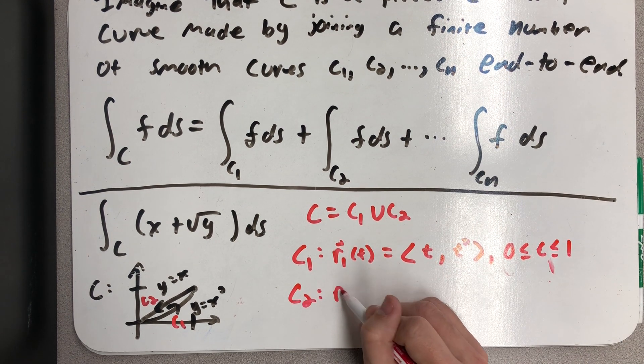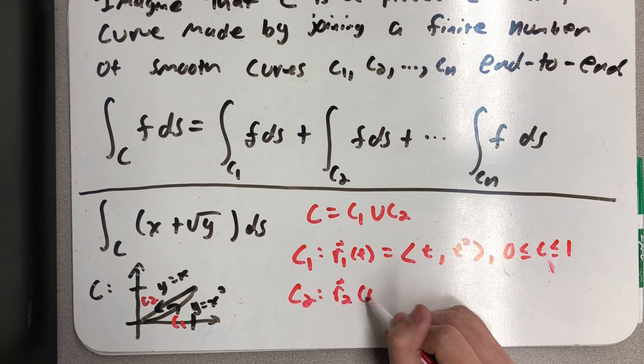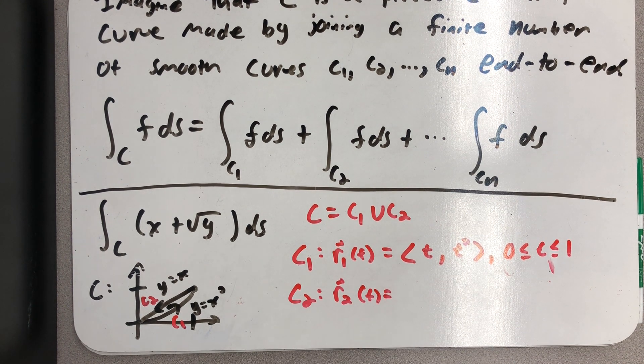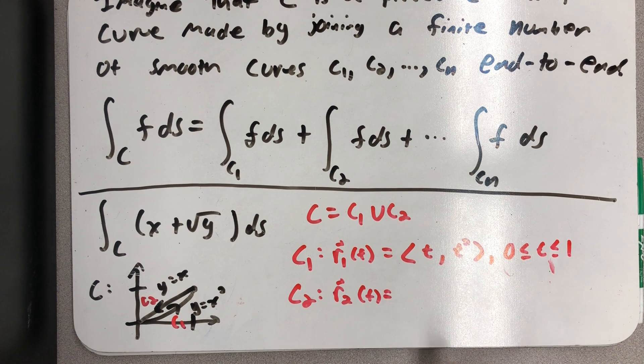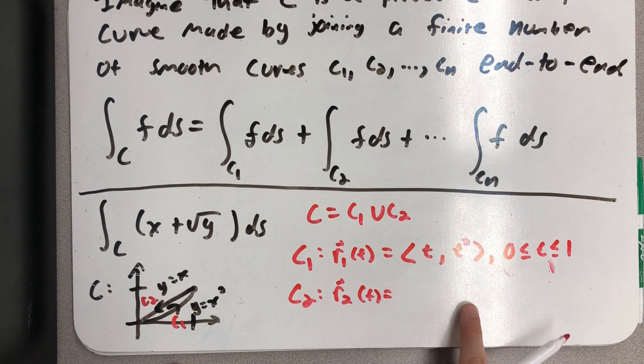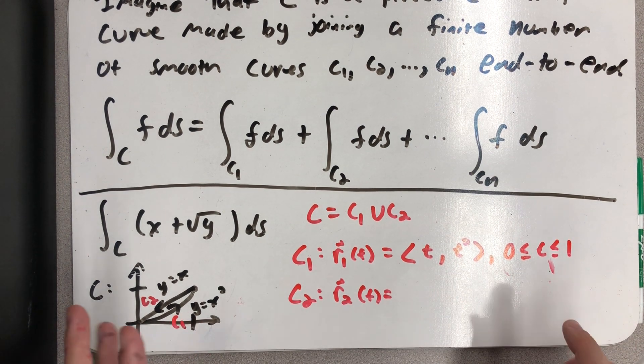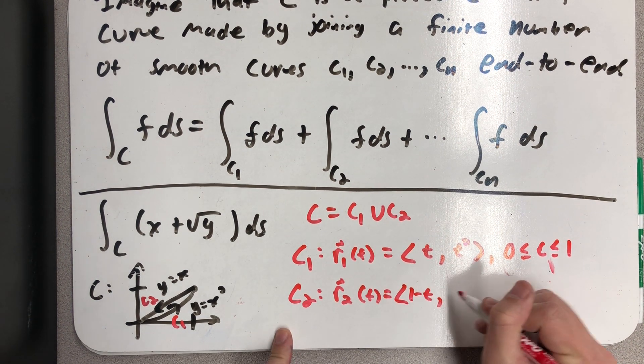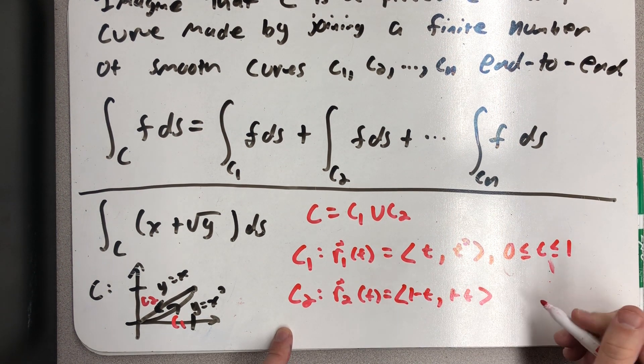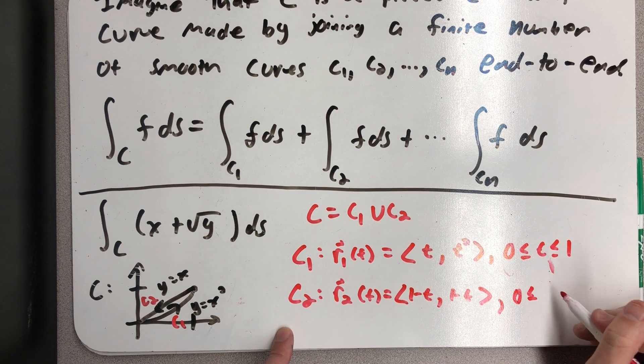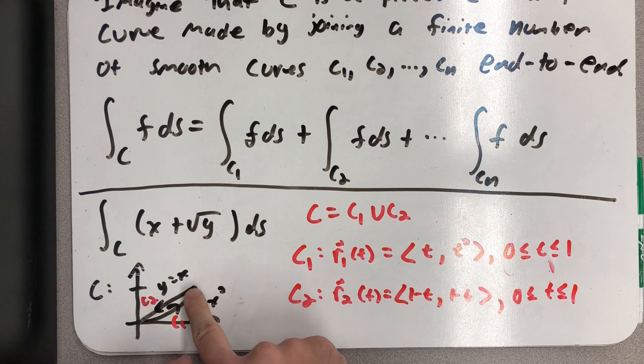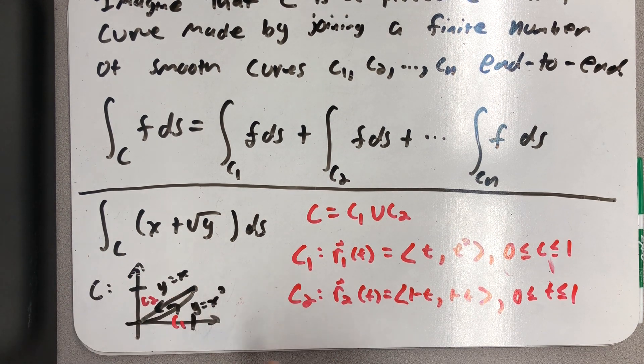The path C2, and I'll call its parameterization R2 of t. Well, let's see. It's along the path y equals x. So I could actually be very lazy here and just say (t, t), and then my interval would be from one back to zero. But I want to be a little more clever than that. I'm going to say (1-t, 1-t), and let my parameter interval be from zero to one again. So from zero to one gets me here, and then on the next path, zero to one gets me here.